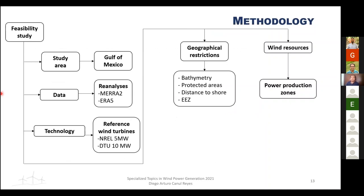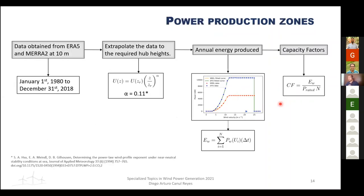The next part of the methodology covers the wind resource and power production zones. The process begins with wind velocity components at 10 meters — the standard height in reanalysis datasets — covering the period from 1980 to 2019, approximately 39 years. The data was then extrapolated to the hub heights of the wind turbines (90 m and 120 m) using the power law vertical profile with an empirical coefficient alpha taken from the literature.